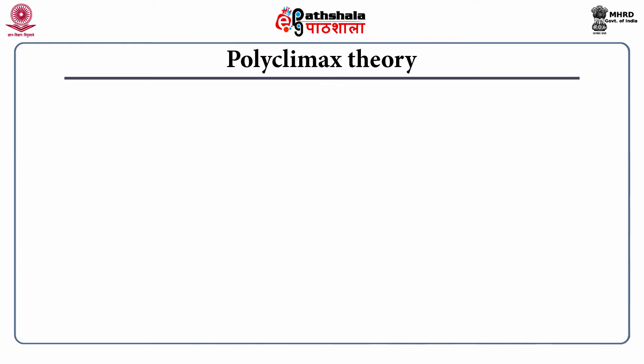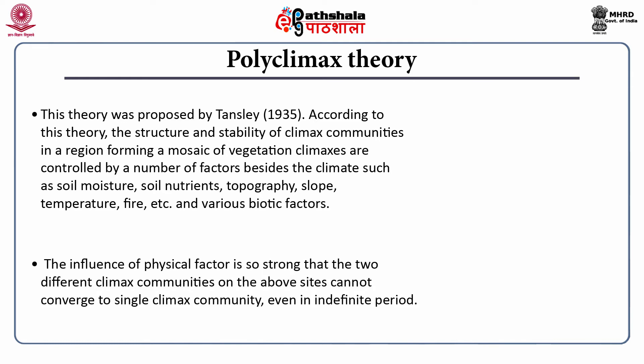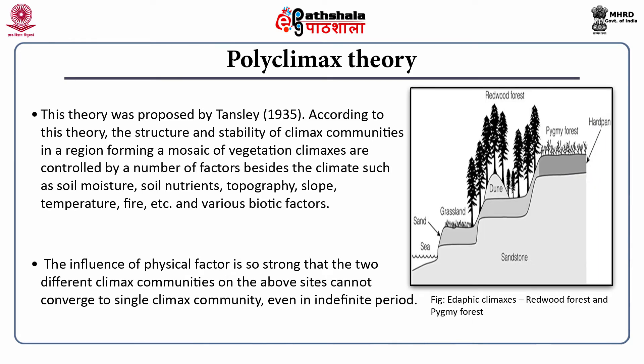The second theory is the Polyclimax theory, proposed by Tansley in 1935. According to this theory, the structure and stability of climax communities in a region form a mosaic of vegetation climaxes controlled by a number of factors besides climate. These factors include soil moisture, soil nutrients, topography, slope, temperature, fire, and various biotic factors. The influence of physical factors is so strong that two different climax communities cannot converge to a single climax community even over indefinite periods. This figure shows the edaphic climaxes — redwood forests and pygmy forests.